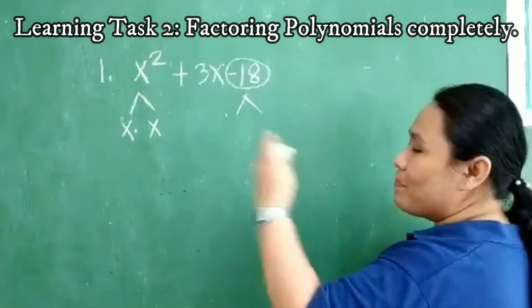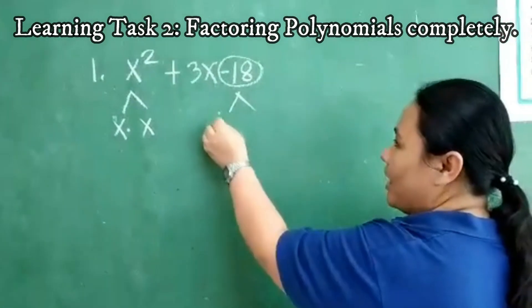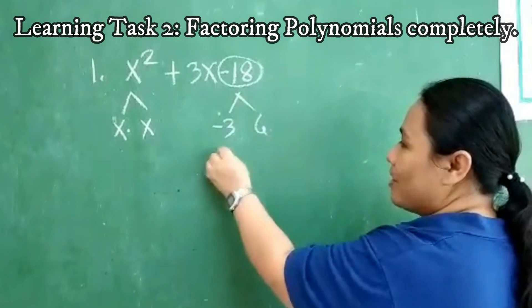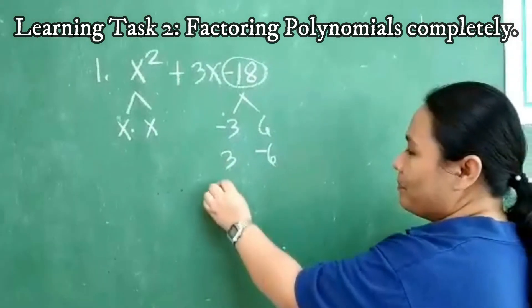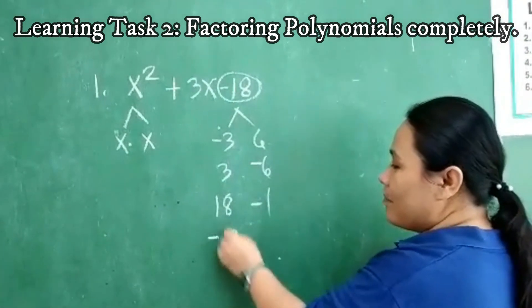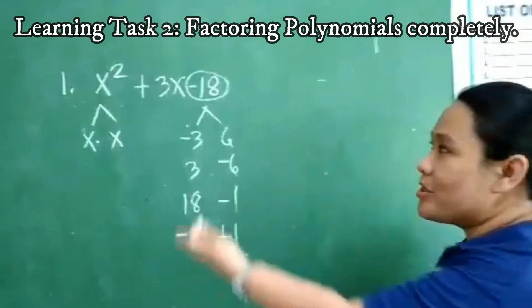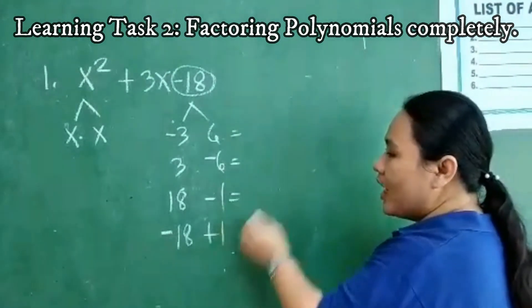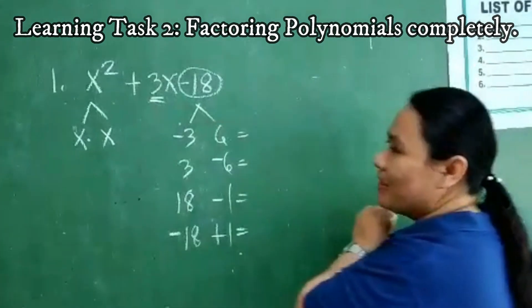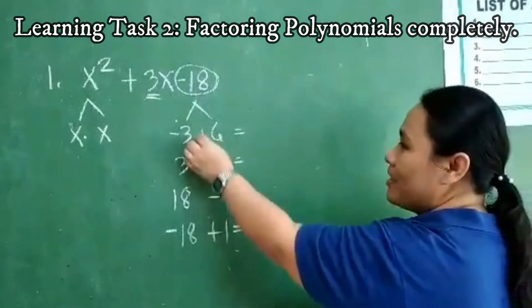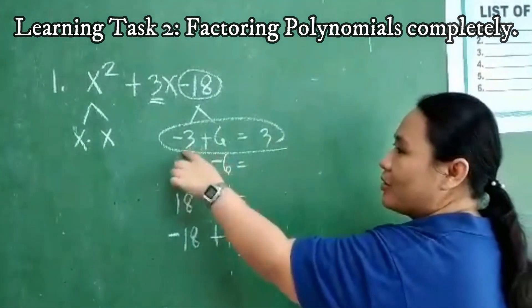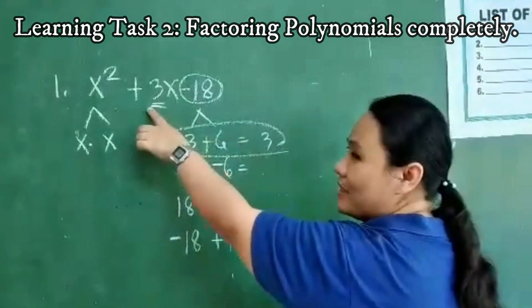Therefore, the two factors should be positive and negative. We can have the factors: negative 3 and positive 6, positive 3 and negative 6, positive 18 and negative 1, negative 18 and positive 1. After getting all the factors of the last term, you need to add the following factors to get the middle term. For negative 3 plus 6, we get positive 3. Therefore, these will be the factors of the last term since the sum is positive 3.